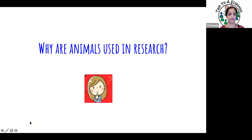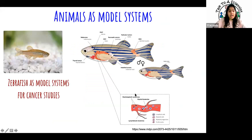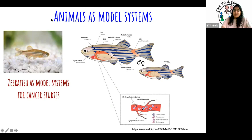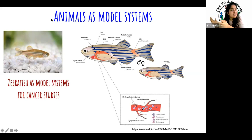Why do we have to use animals at all — can't we do research without them? The first reason is that animals serve as model systems. A model represents something: a model of the solar system is a representation — not the real thing, but it shows the sun, all the planets, and that they revolve around the sun. Some things are accurate representations; others, like the scale, are not.